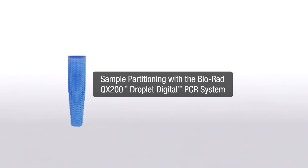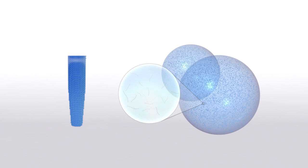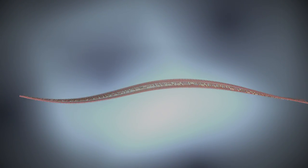Let's see how droplet digital PCR achieves precise DNA measurements. The key is sample partitioning. With droplet digital PCR, reaction mixes are partitioned into approximately 20,000 evenly-sized droplets, each one nanoliter in volume.